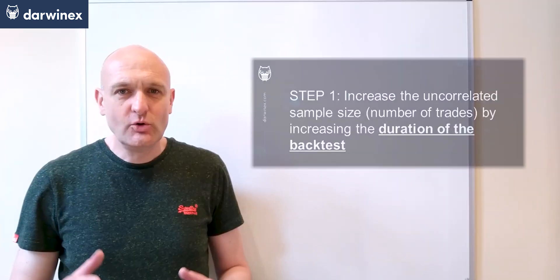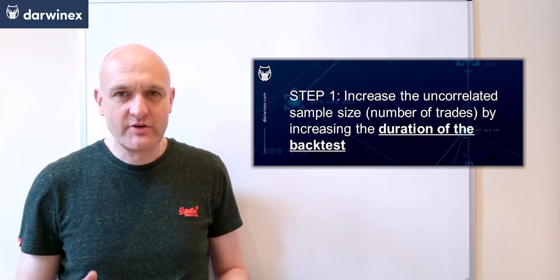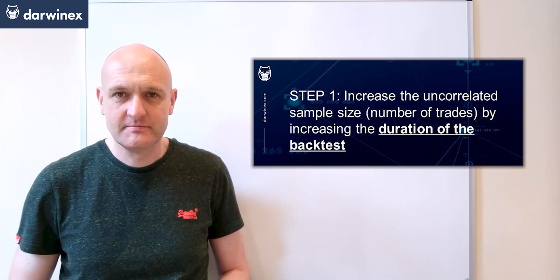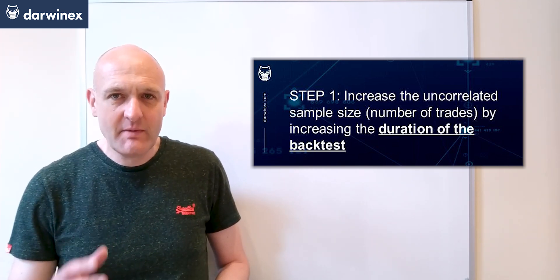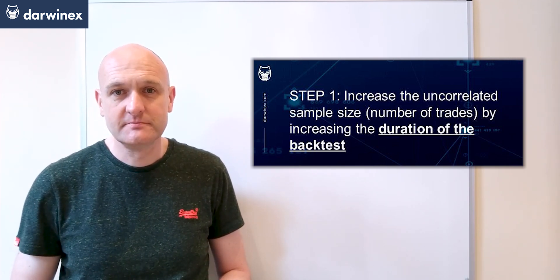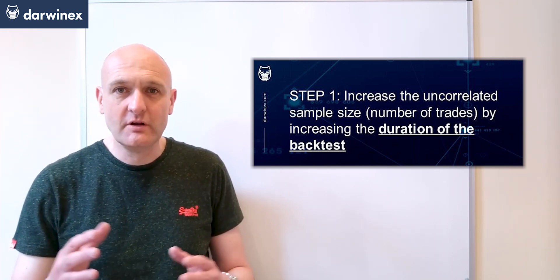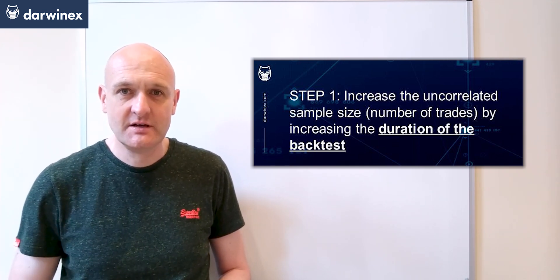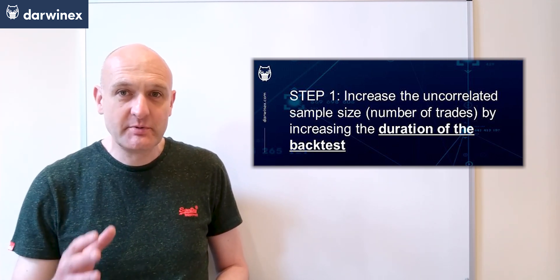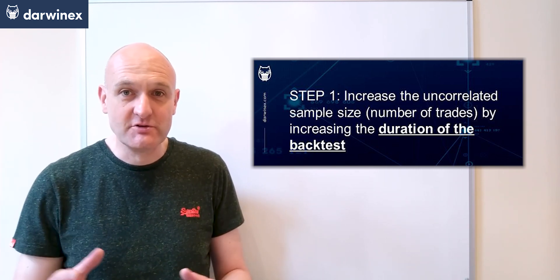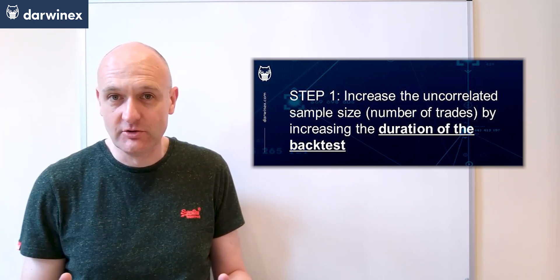So let's take a look at step one. This is all about increasing the number of trades by increasing the duration of the backtest. Let's quickly remind ourselves why sample size is so important. In episode one, we saw that large numbers of trades reduces the effects of random chance, helping the parameter values with the genuine edges to rise over those that have little or no edge at all.